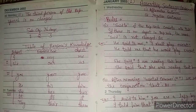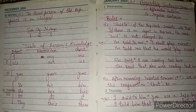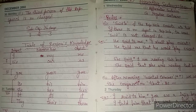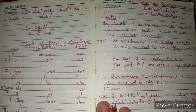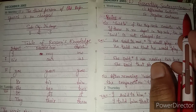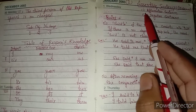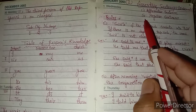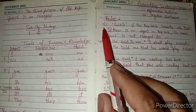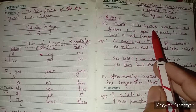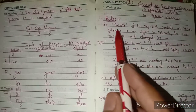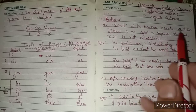Now dear students, you should know how many types of sentences there are. There are five types of sentences. Rule number one for assertive sentences: 'said to' of the reporting verb is converted into 'told'. The 'said to' of the reporting verb is changed into 'told'.